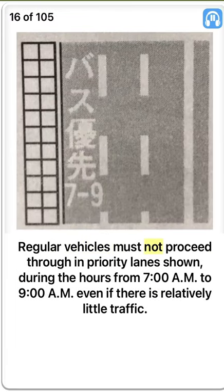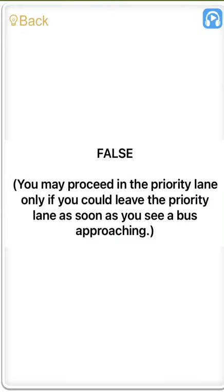Regular vehicles must not proceed through priority lanes shown during the hours from 7am to 9am even if there is relatively little traffic. False. You may proceed in the priority lane only if you could leave the priority lane as soon as you see a bus approaching.